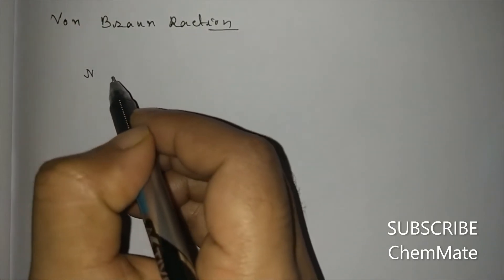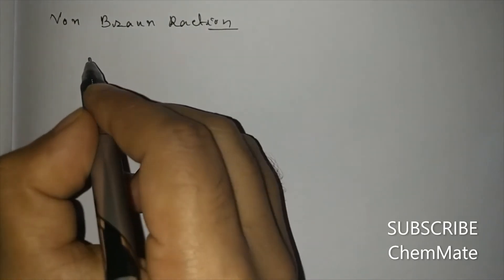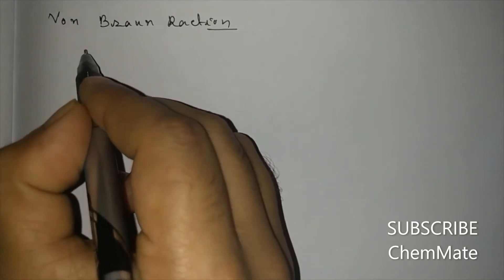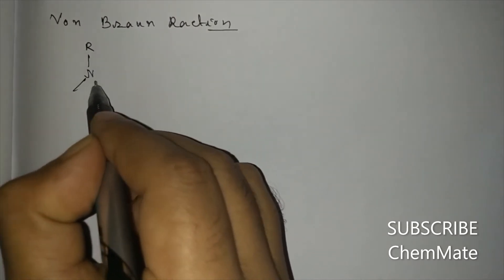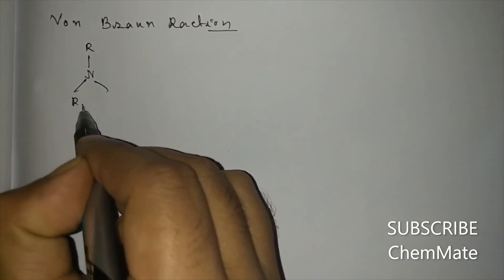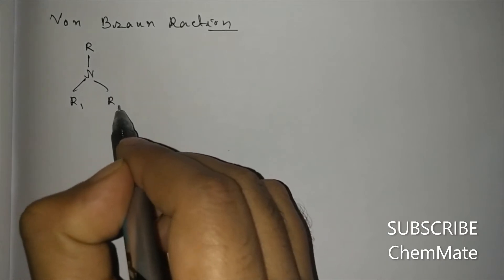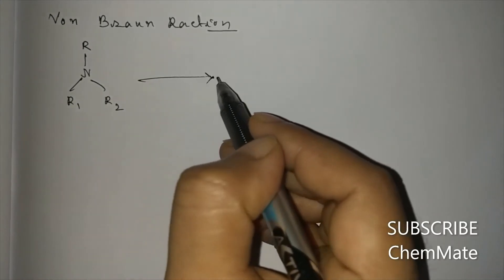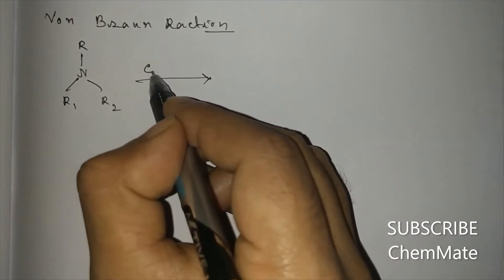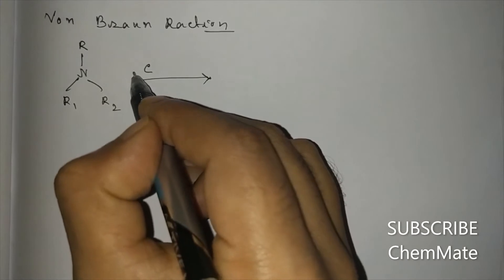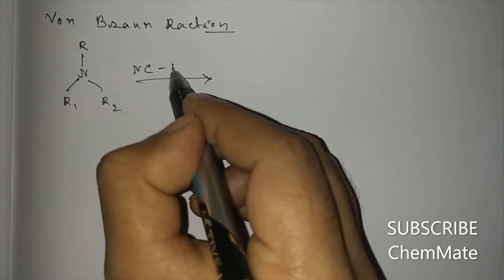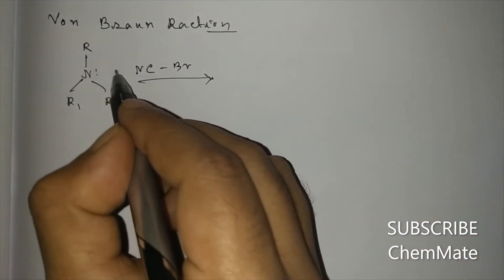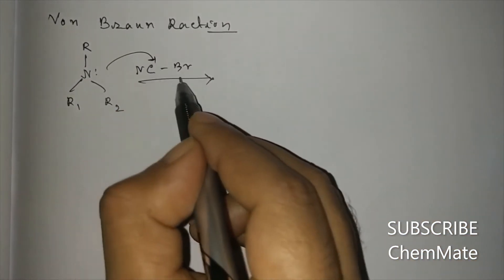In this reaction, a tertiary amine is treated with cyanogen bromide, that is CNBr. What happens is a simple SN2 reaction will take place.